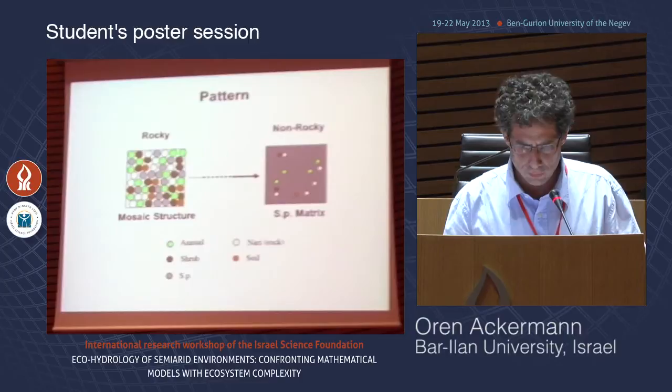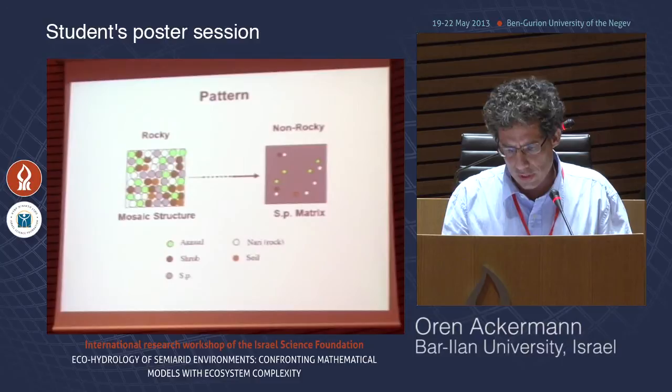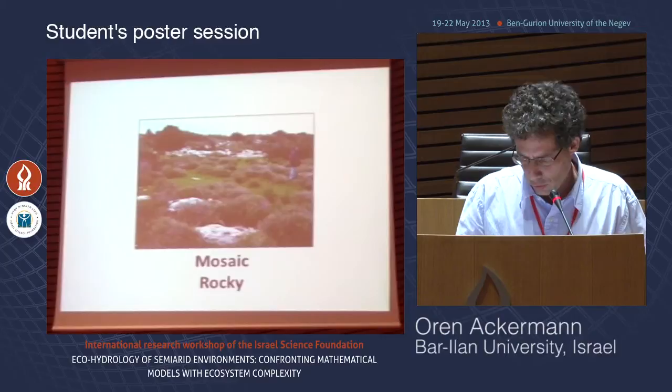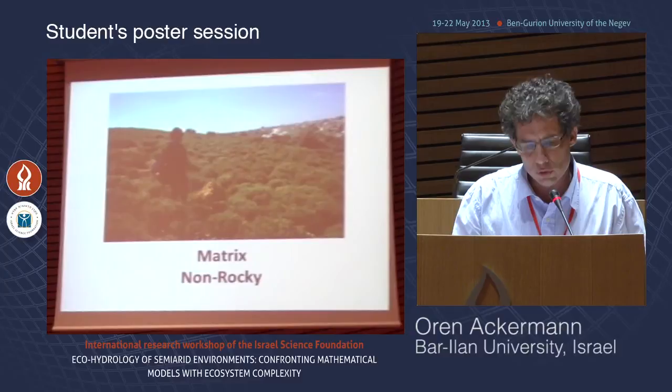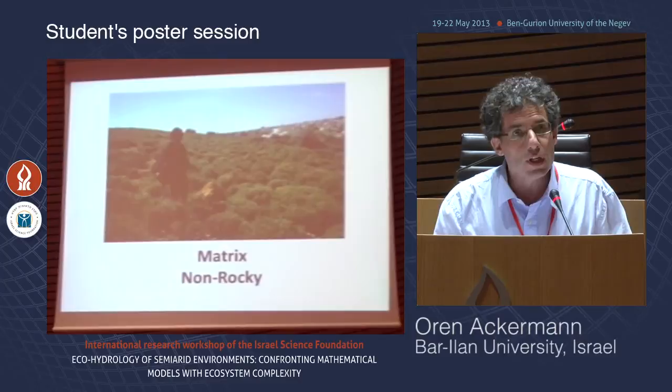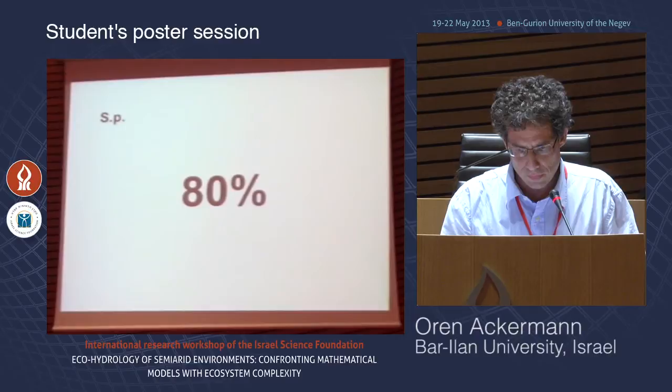The rocky structure is characterized by mosaic structure, while the non-rocky is characterized by SP matrix structure. Here you can see the mosaic rocky structure, and here you can see the matrix on the non-rocky surface, with a dense cover of SP with coverage of 80% of the surface.